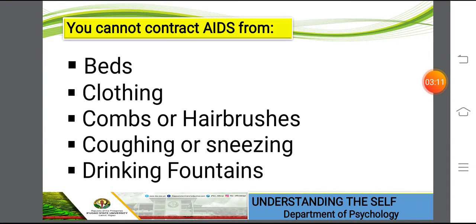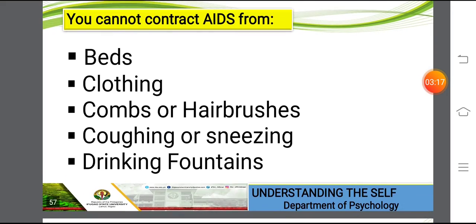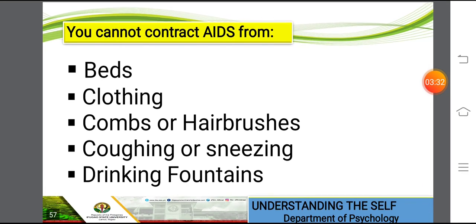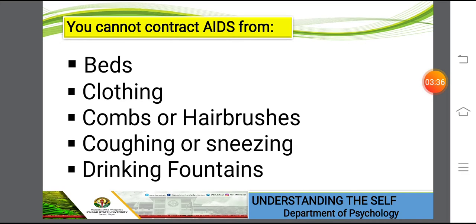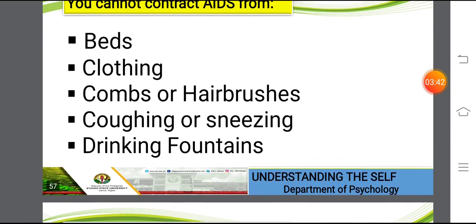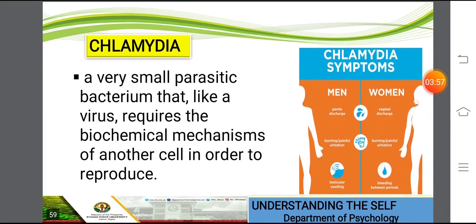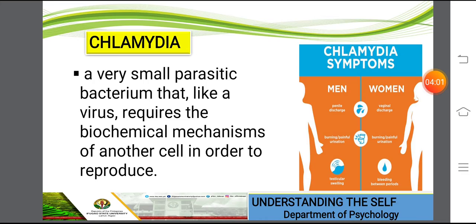Having discussed the ways of transmission, let's now discuss the misconceptions about getting AIDS. You cannot get AIDS through beds, bedsheets, clothing, combs, hairbrushes, coughing or sneezing, or drinking fountains. You also cannot get it from doorknobs, bathtubs, hugging, kissing, shaking hands, sharing food, silverware, or nail files. We should remember those to avoid misconceptions.